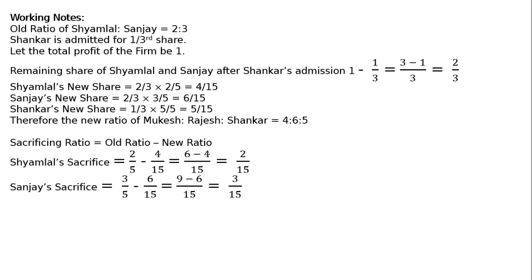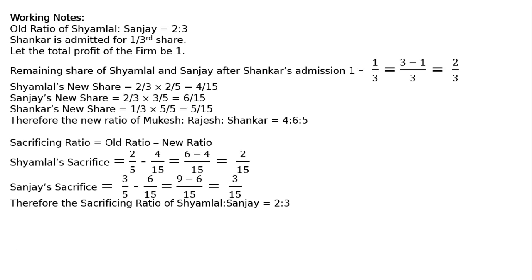Sanjay's sacrifice is 3/5 − 6/15. Taking LCM as 15: (9−6)/15 = 3/15. Sankar has no sacrifice. Therefore, the sacrificing ratio of Samlal to Sanjay is 2:3.